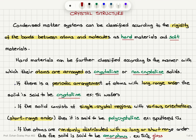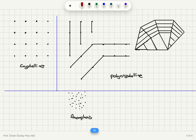To summarize, we classify materials according to the arrangement of their atoms. If there is a nice periodic arrangement with long-range order, the materials are crystalline. If there is a short-range order with single-crystal regions each having a different orientation, it is polycrystalline — for example, sputtered copper. If there is no order and atoms are randomly distributed, we have an amorphous structure, for example, glass.